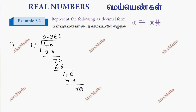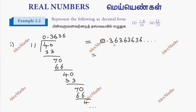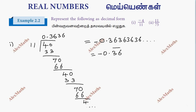So, we have 0, 6 times, 66. Again, 4 balance. So this continues. The decimal form is 0.3636, 36 — this is a repeating decimal 0.36 repeating.